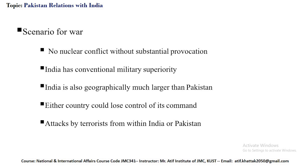India has conventional military superiority and is also geographically much larger than Pakistan. One possible route to nuclear war involves a conventional conflict between India and Pakistan — if Pakistan perceived that India were about to successfully invade them, that would put pressure on Pakistan to launch its nuclear weapons before being overrun by superior Indian conventional forces. Another possibility for starting a nuclear conflict is that India or Pakistan could lose control of its command and control structures due to an attack by the other side, or possibly an attack by terrorists from within or from another country.